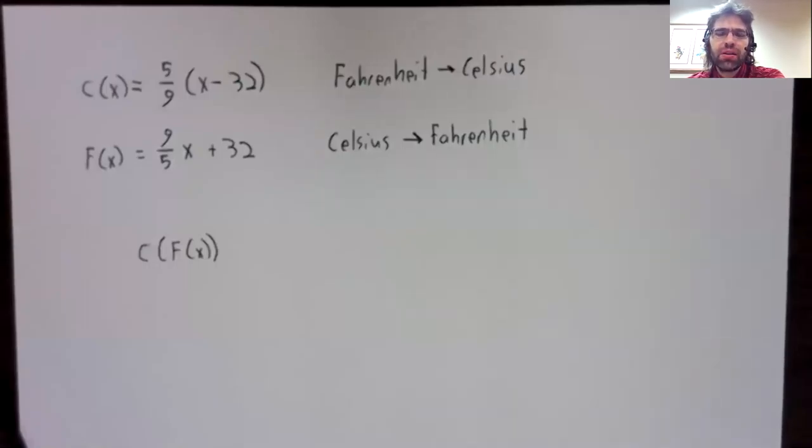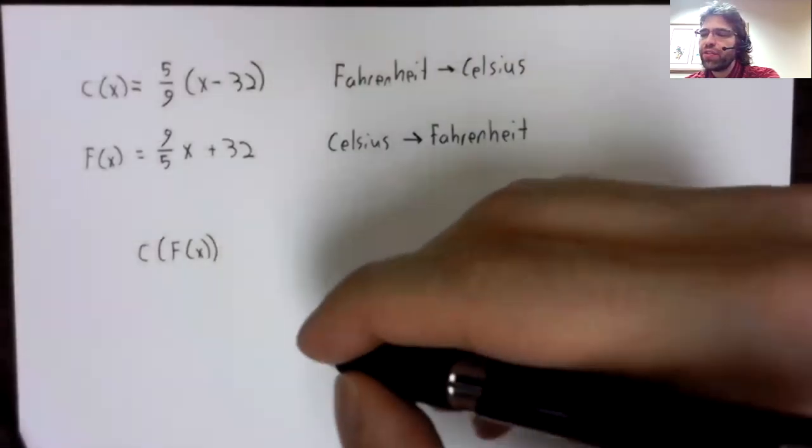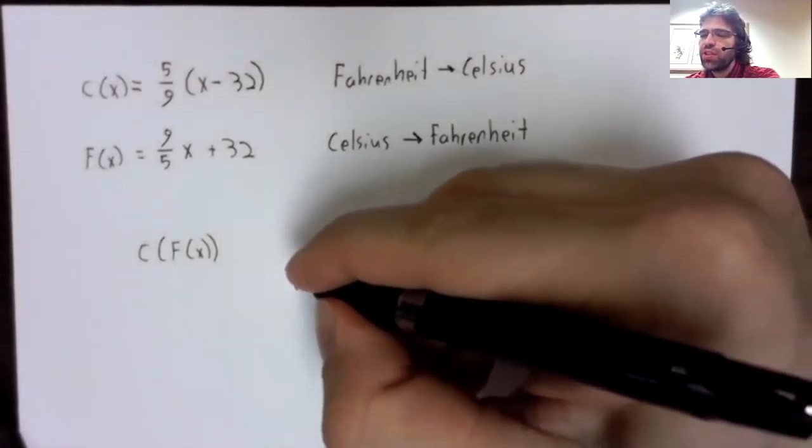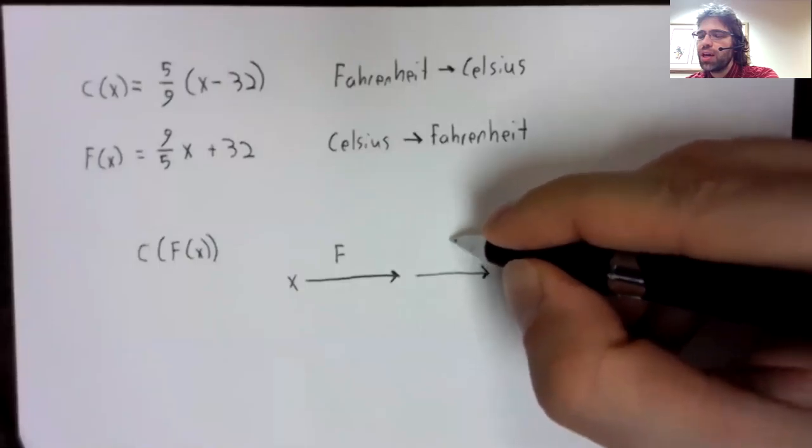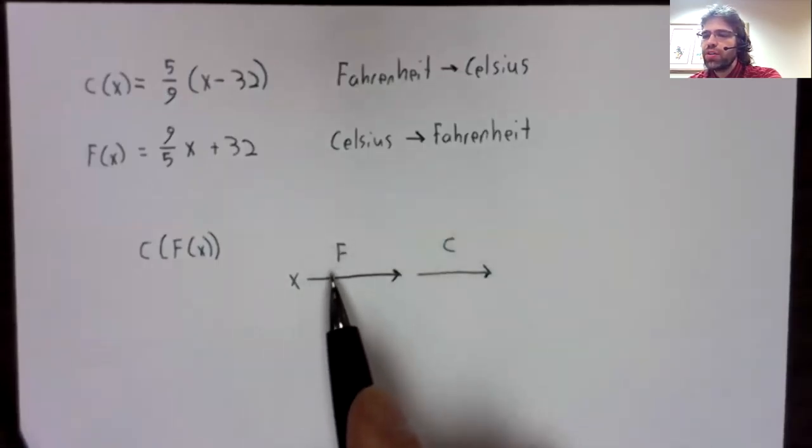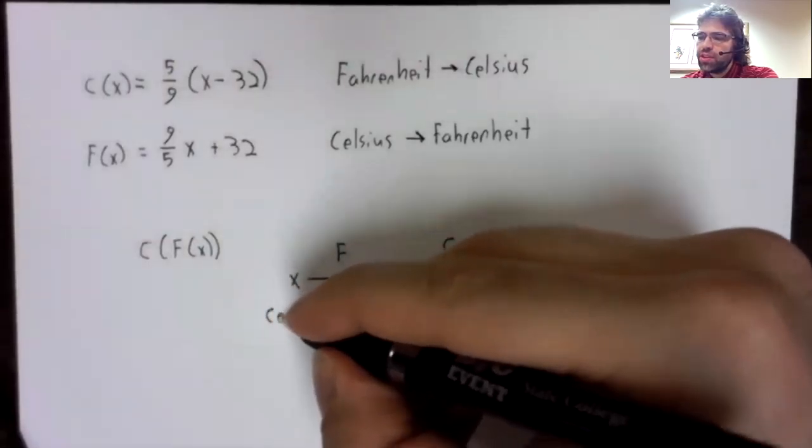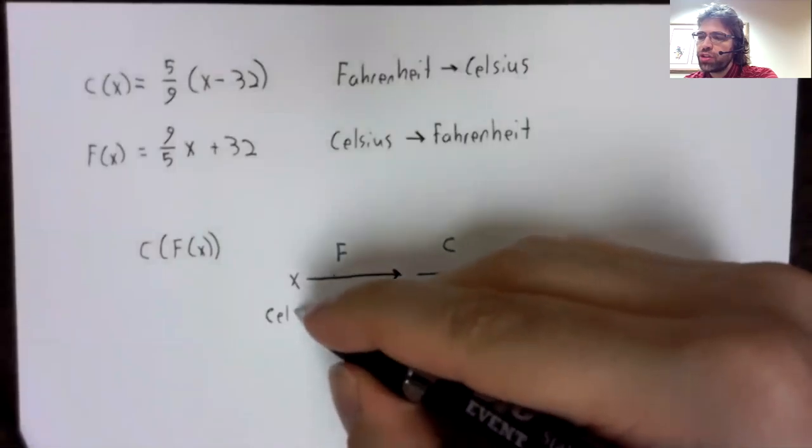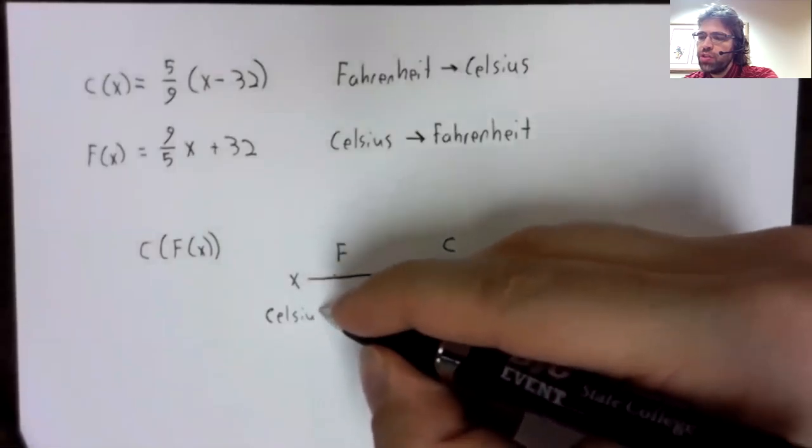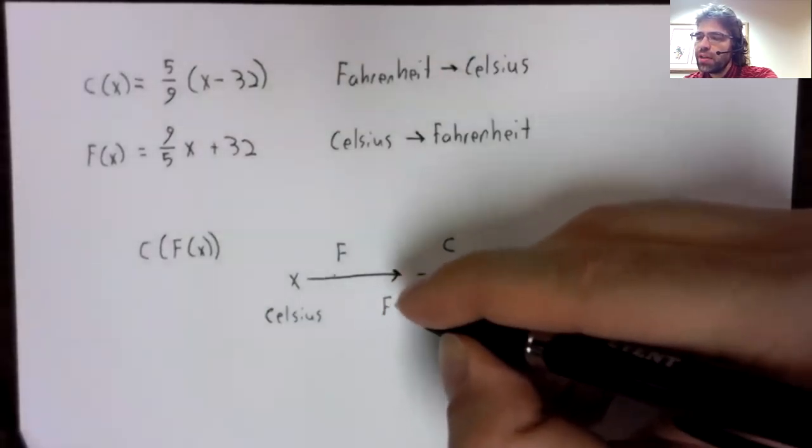What would happen if I took the composition of these functions? I'm not going to do any math here. I'm just going to think it through. Composition is done right to left. So we start with x, then we apply the function f.